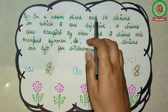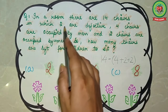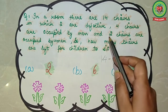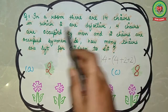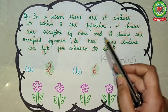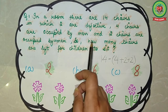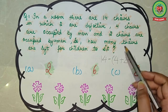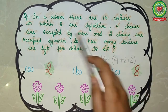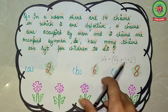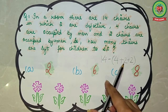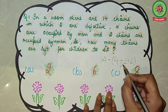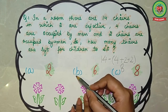First question — read the statement: In a room there are 14 chairs, in which two are defective, two chairs are occupied by men, and two chairs are occupied by women. So how many chairs are left for children to sit? Total are 14 minus four — two are occupied by men, two are defective, two are occupied by women — so 14 minus 8 is 6. The answer is 6.